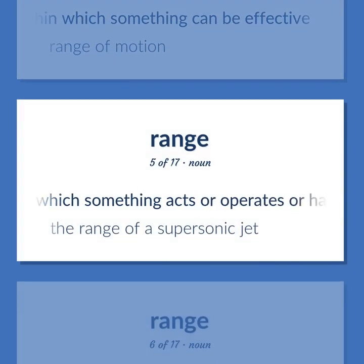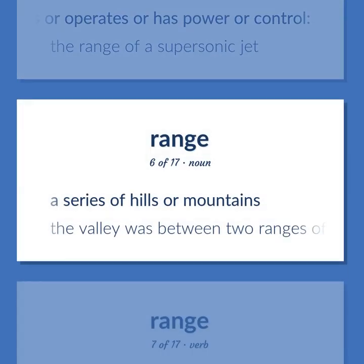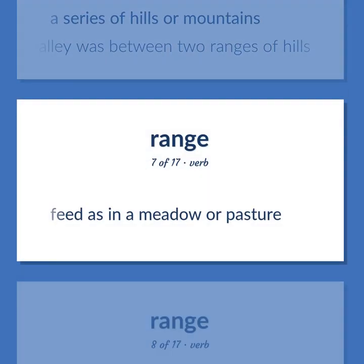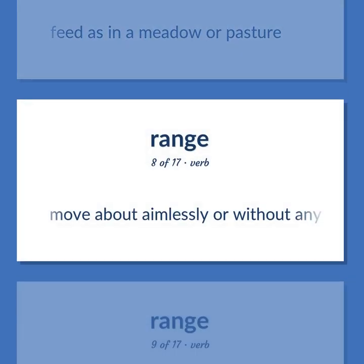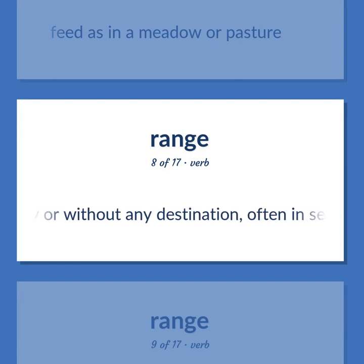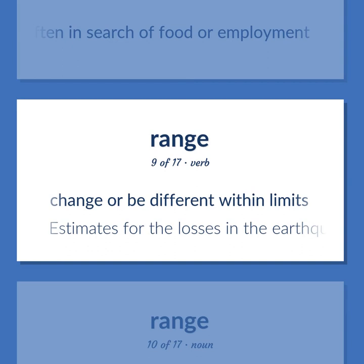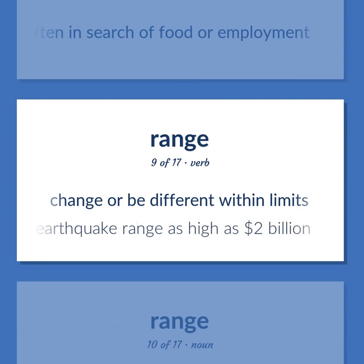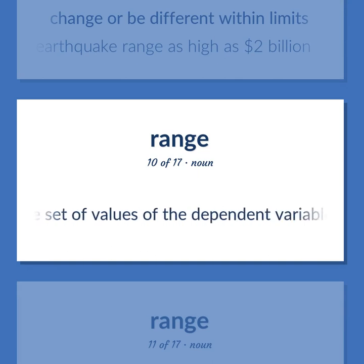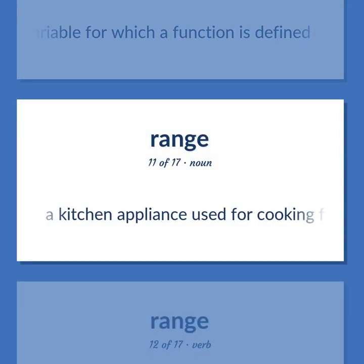An area in which something acts or operates or has power or control. The range of a supersonic jet. A series of hills or mountains. The valley was between two ranges of hills. Feed as in a meadow or pasture. Move about aimlessly or without any destination, often in search of food or employment. Change or be different within limits. Estimates for the losses in the earthquake range as high as $2 billion. Mathematics: the set of values of the dependent variable for which a function is defined. A kitchen appliance used for cooking food.